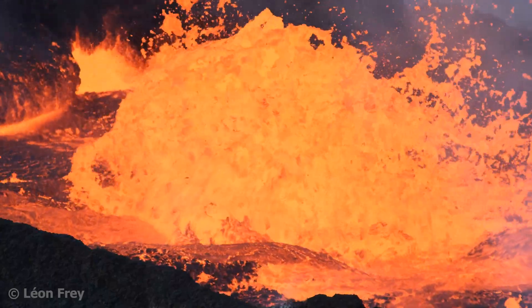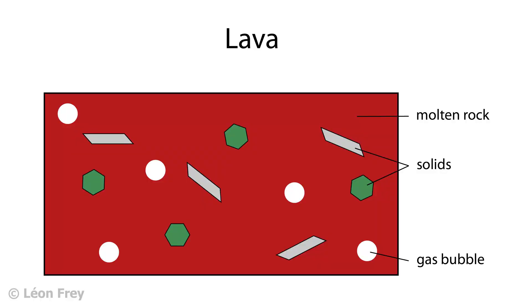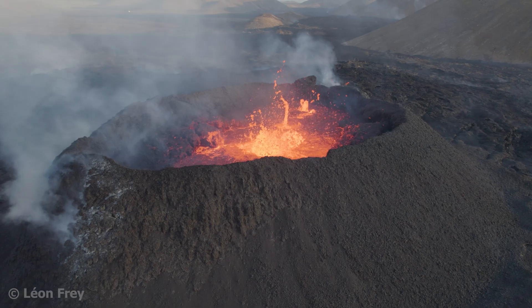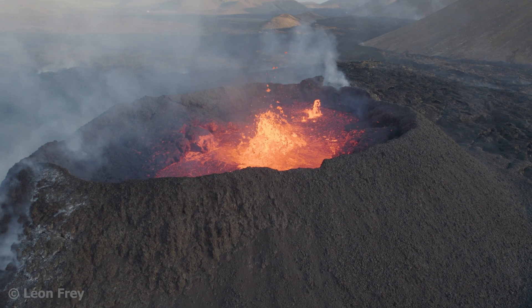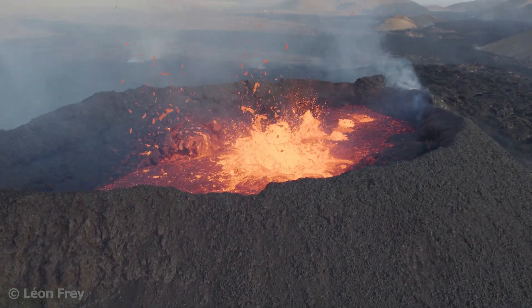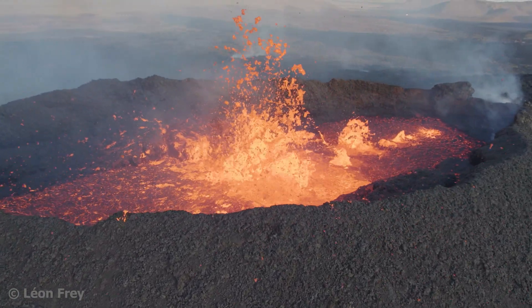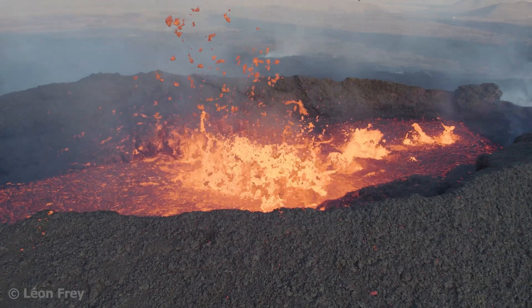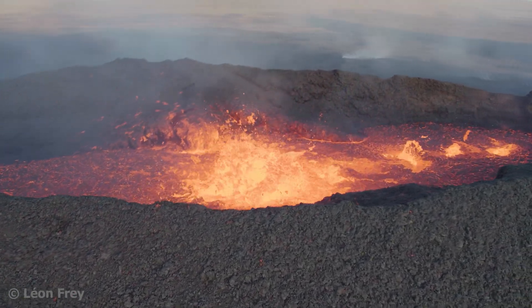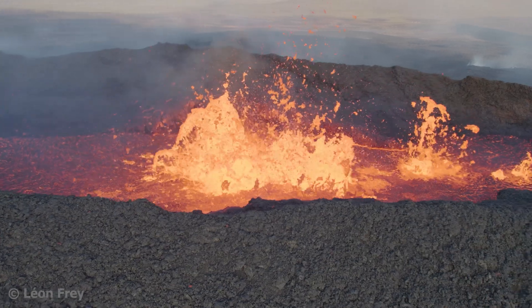What is lava made of? Lava is a mixture of liquid rock, solid particles, and gas bubbles. When it is inside the earth it is called magma; when it reaches the earth's surface it is called lava, as we've learned in the previous video. But what is the composition of the liquid rock forming magma and lava?